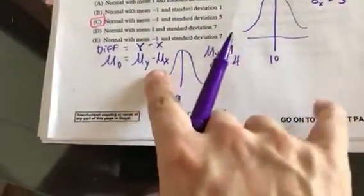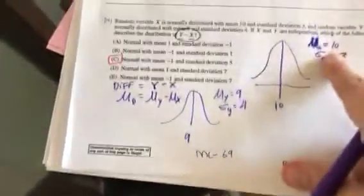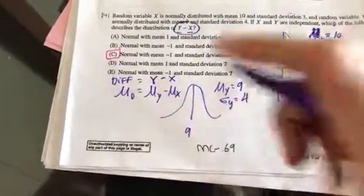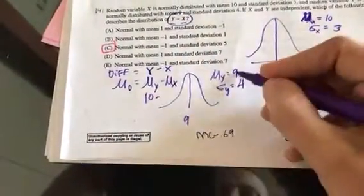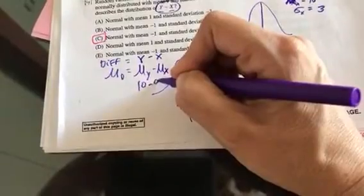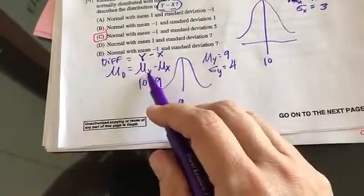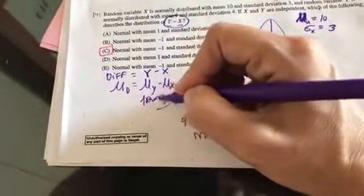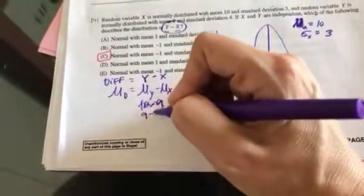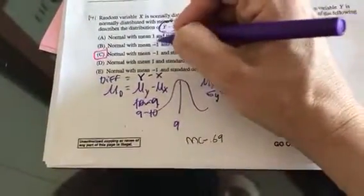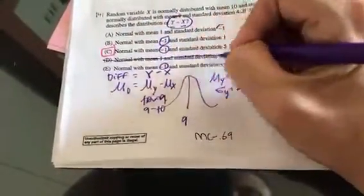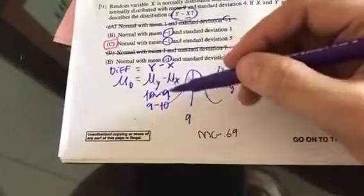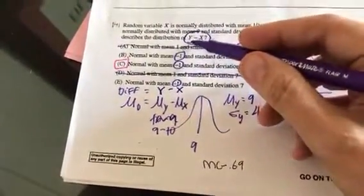So when we add or subtract numbers, we can just merely add or subtract the means. So I have 10 minus 9, when I subtract the means. But oops, mu of y is 9, mu of x is 10. So I do have to keep track, I was supposed to take 9 minus 10 and get negative 1. So right away, I'm eliminating d and eliminating a. And notice they anticipated I might make that mistake of not keeping track of which one do I subtract first.